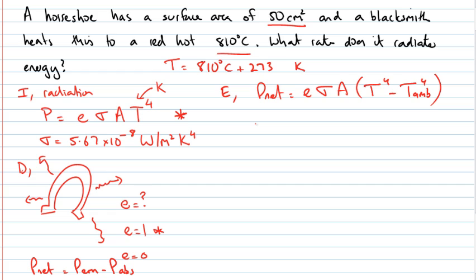So let's have a look at what would be 1,083, which is the temperature of my horseshoe to the power 4. Let's compare that with my ambient temperature, around room temperature of 300 Kelvin to the power 4. We've got 1.3756 by 10 to the 12 and 8.1 by 10 to the power 9.